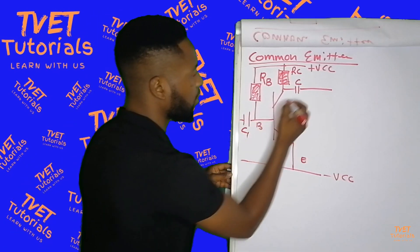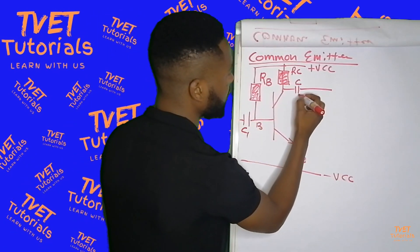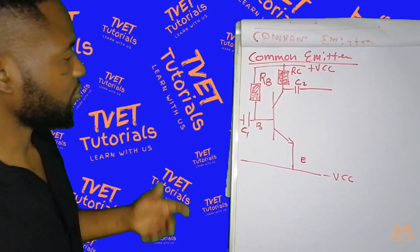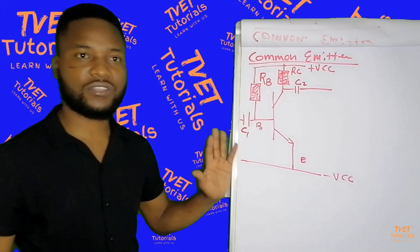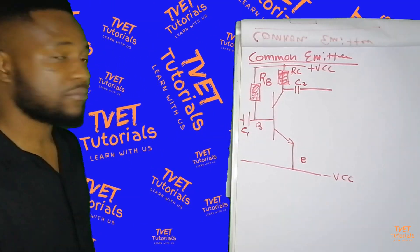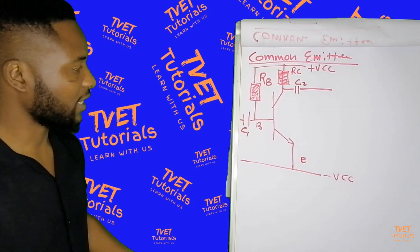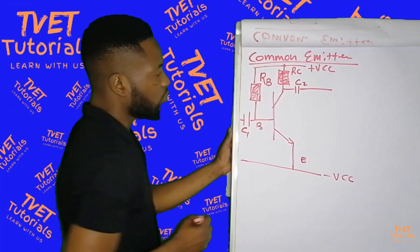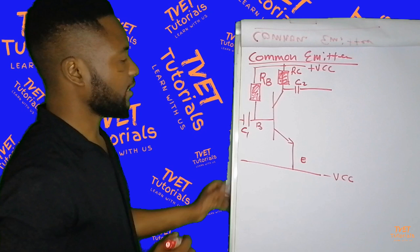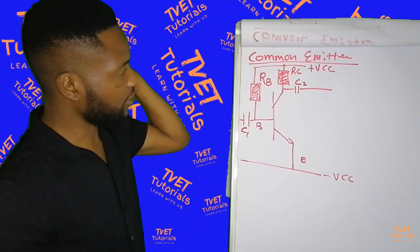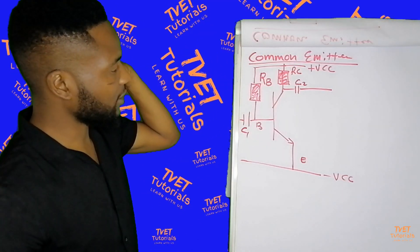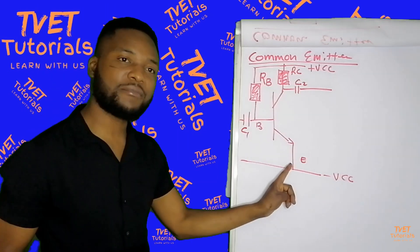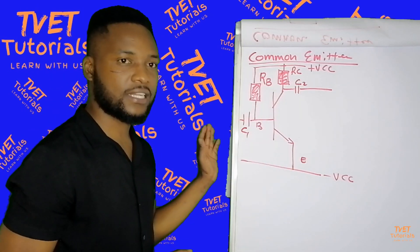So we can say this is C1, and this is C2 connected to the output. C1 is connected on the input — it's used as a coupling capacitor. So in this configuration, you have RC connected on the collector side, RB connected on the base side, and on the emitter side there is nothing connected.